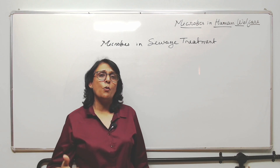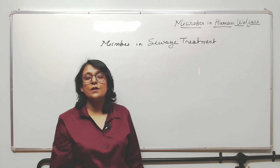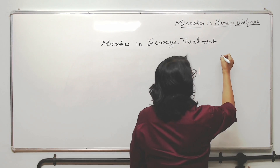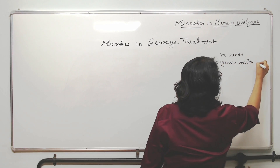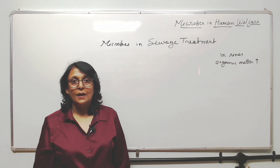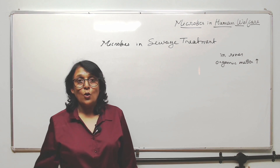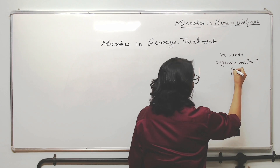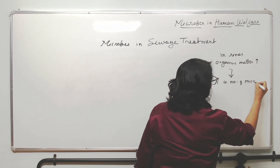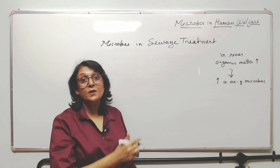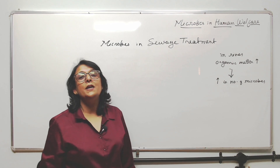If this sewage is directly poured into a water body — suppose the sewage from any city or town is directly poured into a river — what will happen? Organic matter will increase in the river. Sewage is an organic matter, and this organic matter becomes food for microbes. As this organic matter increases in the water body, the number of microbes will increase, and because they need this food, they will break it down. To break it down, they would need oxygen.